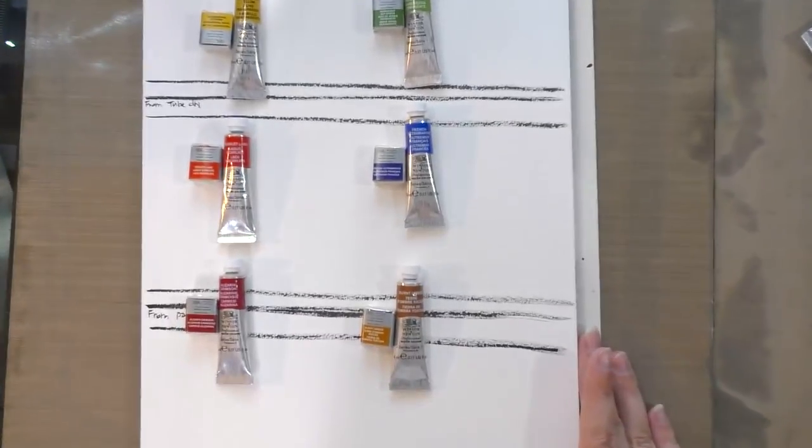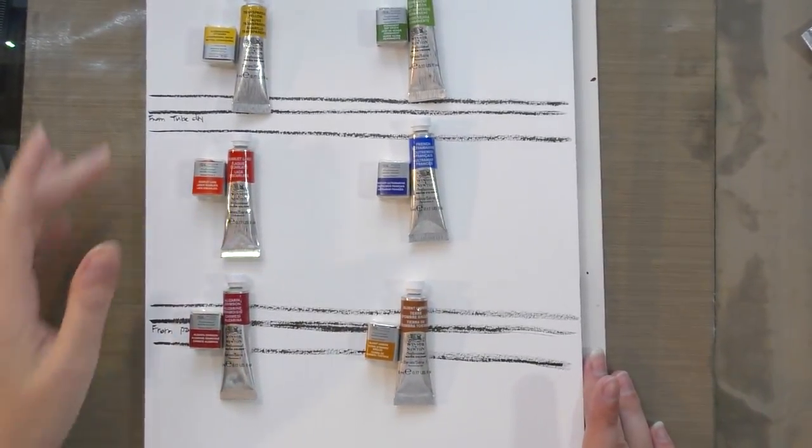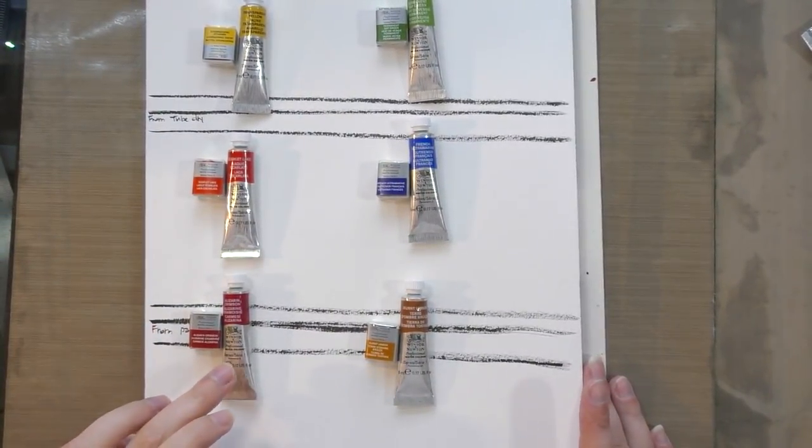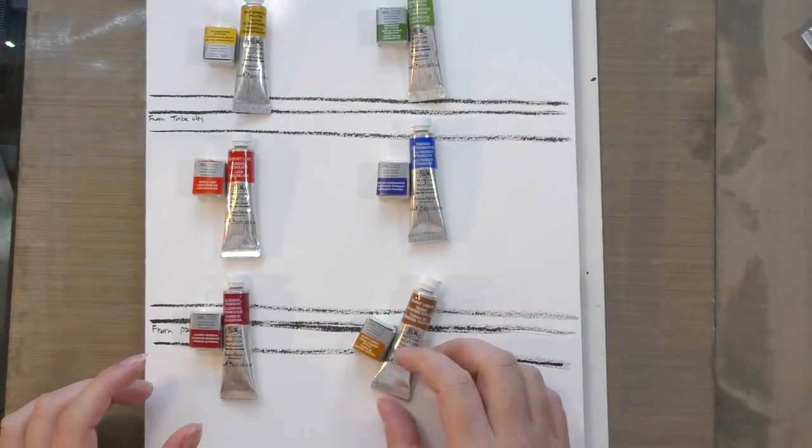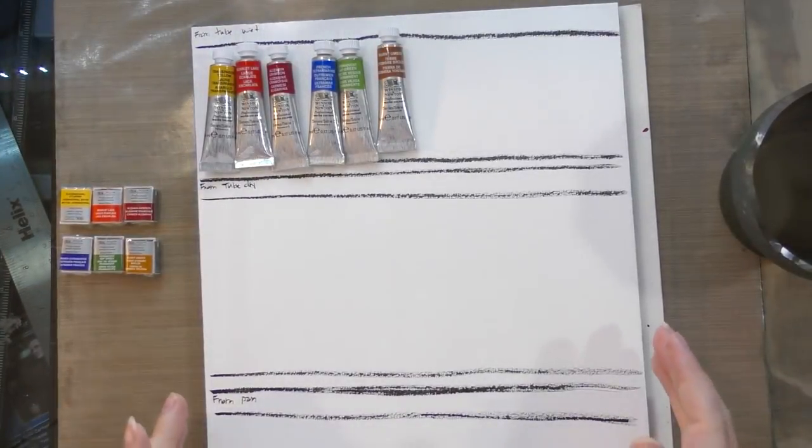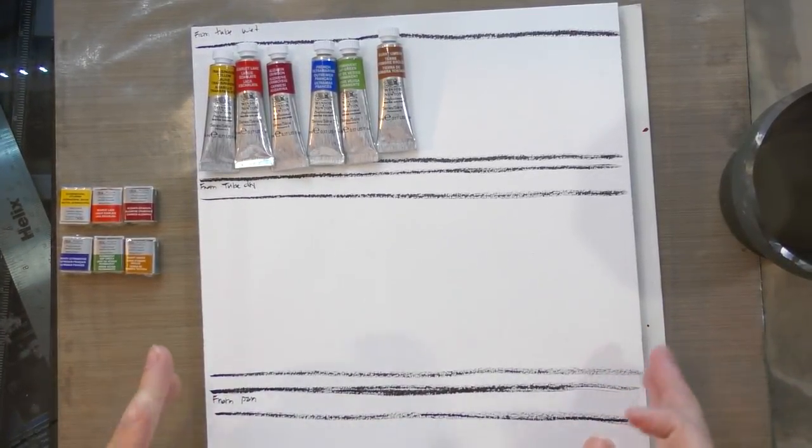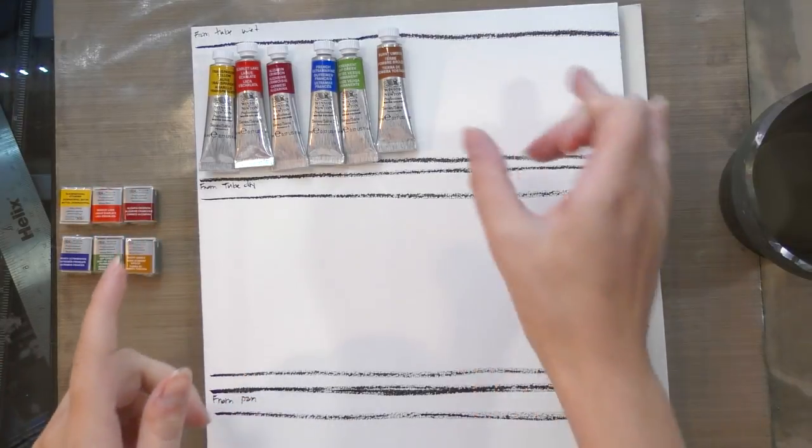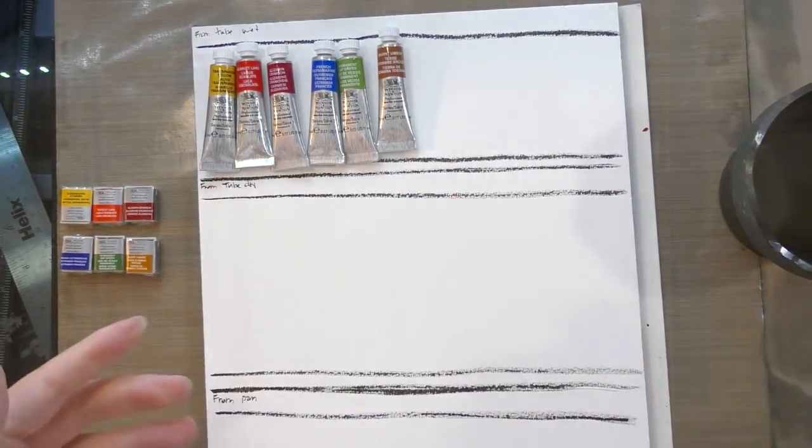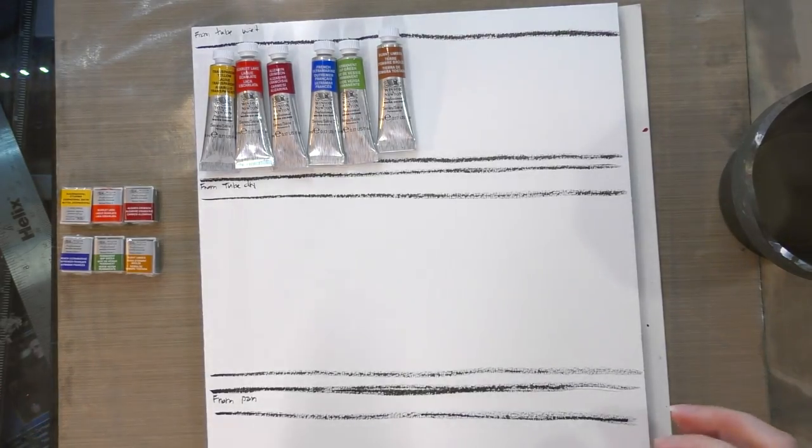This mixes a lot of colors. So I will be doing follow-up swatching. The colors we're going to be looking at today are transparent yellow, scarlet lake, alizarin crimson, permanent sap green, French ultramarine, and burnt umber. For this tube test, I'm going to do it pretty simply. We're going to do a gradiated wash, and then we're going to do a mass tone at the bottom. I've already put down my black pigment lines, and those are to help test for opacity.